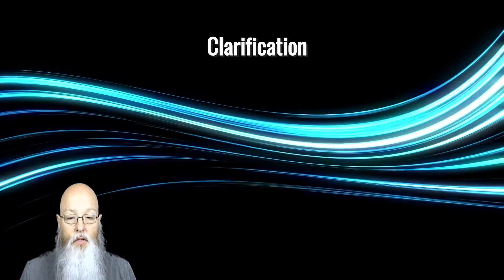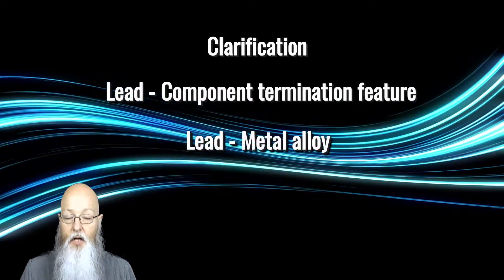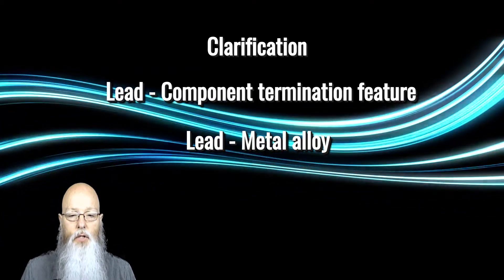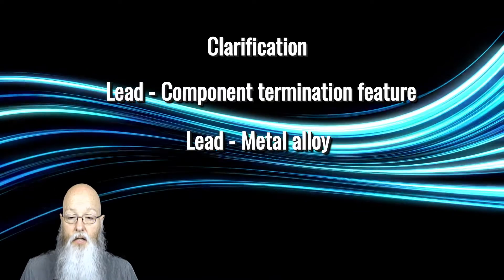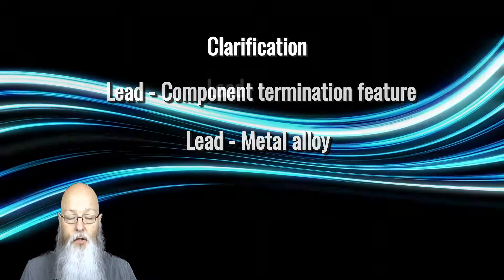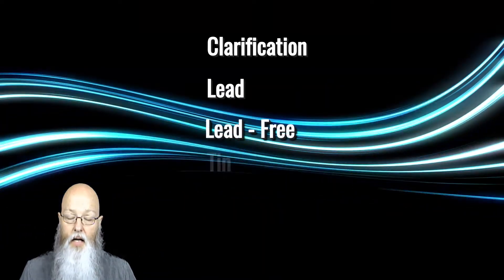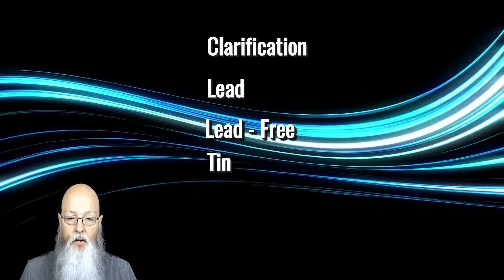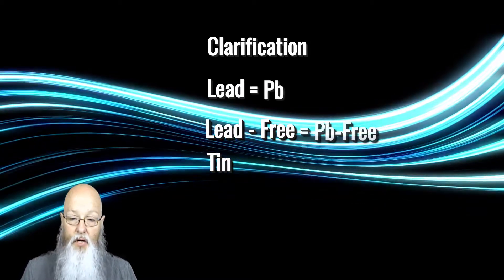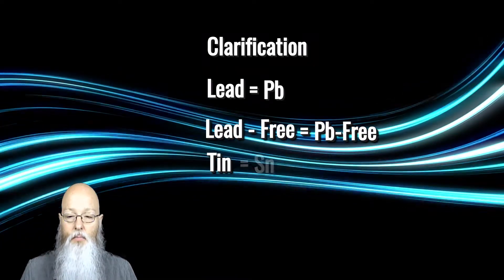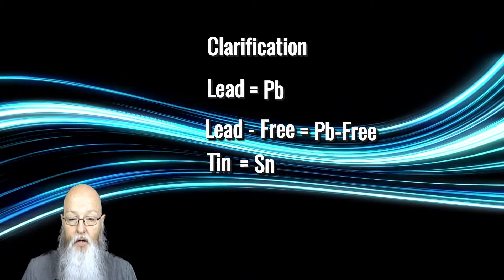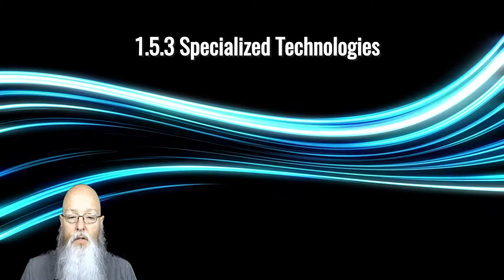The use of the words 'lead' and 'LED' can be confusing, especially for a document reader with English as a second language. An editorial change is the use of the element abbreviations when referring to lead, lead-free, and tin alloys. Lead becomes Pb, lead-free becomes Pb-free, and tin becomes Sn. This is a welcome clarification for many users of the document.